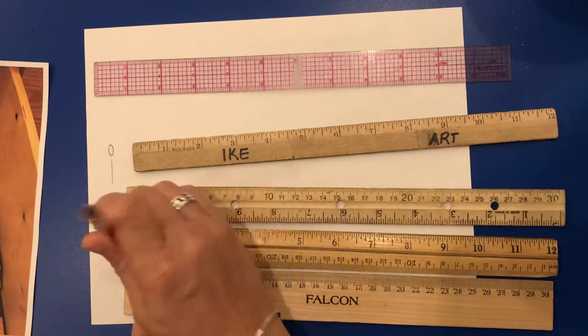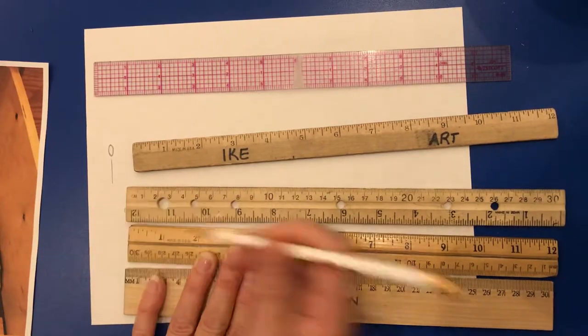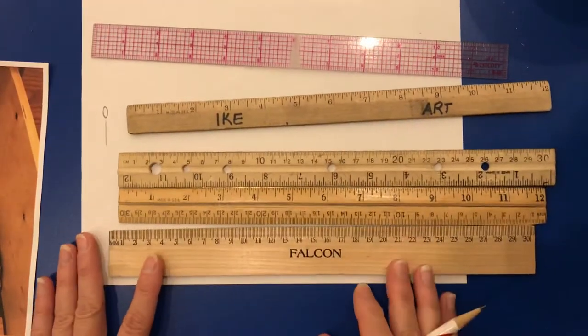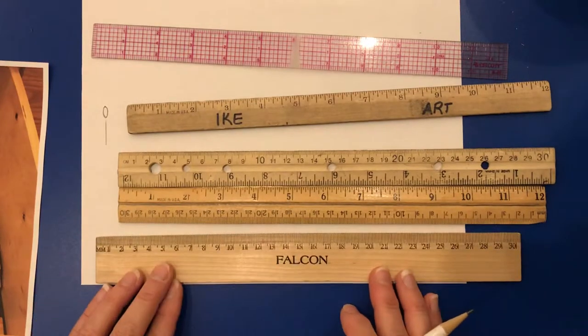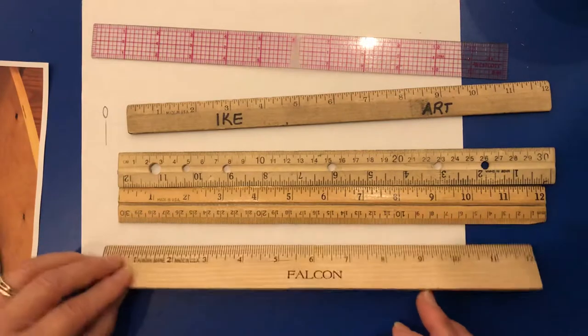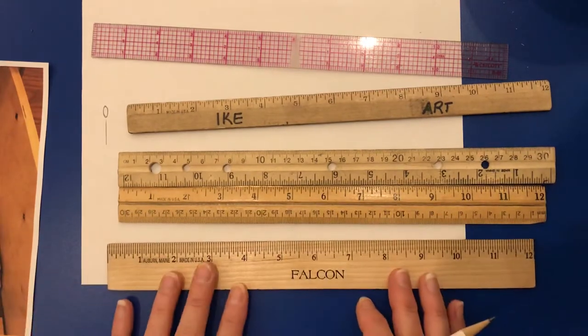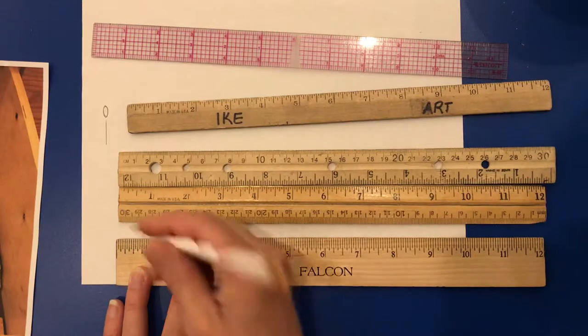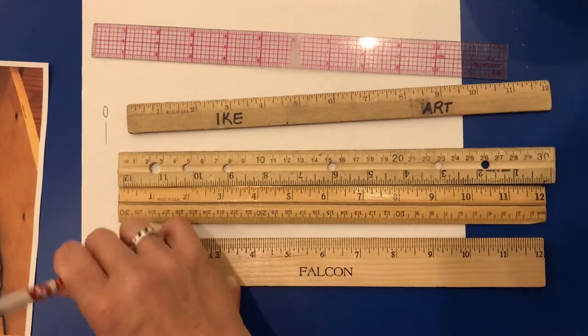This ruler, zero starts over at the end. Now look at this one, you might say there are no inches. Here's one that's a millimeter, and there are no inches. But if you turn the ruler over, now you have your inch side. And again, zero is at the end.